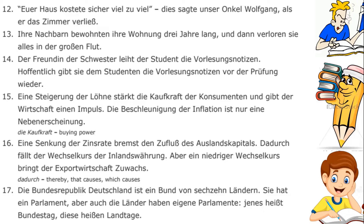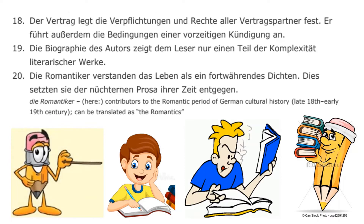The eighteenth sentence: 'Der Vertrag legt die Verpflichtungen und Rechte aller Vertragspartner fest. Er führt außerdem die Bedingungen einer vorzeitigen Kündigung an.' The nineteenth sentence: 'Die Biographie des Autors zeigt dem Leser nur einen Teil der Komplexität literarischer Werke.' The twentieth sentence: 'Die Romantiker verstanden das Leben als ein fortwährendes Dichten. Dies setzten sie der nüchternen Prosa ihrer Zeit entgegen.'